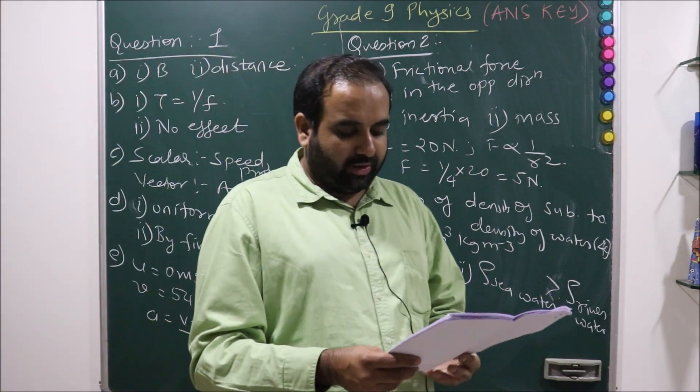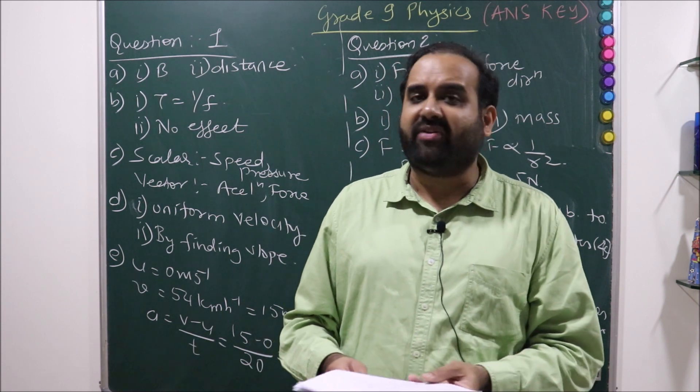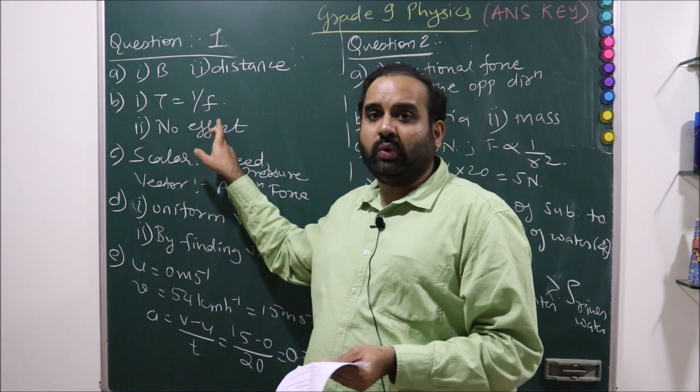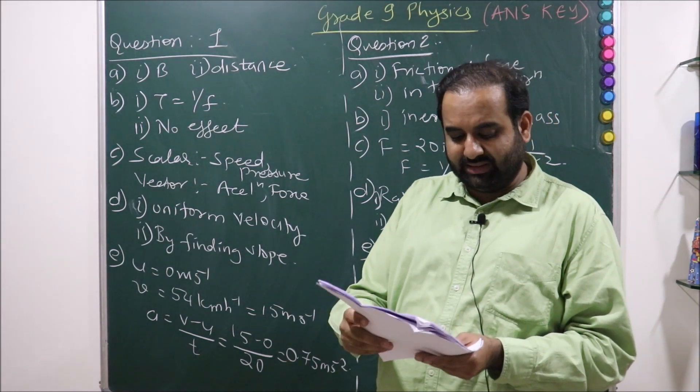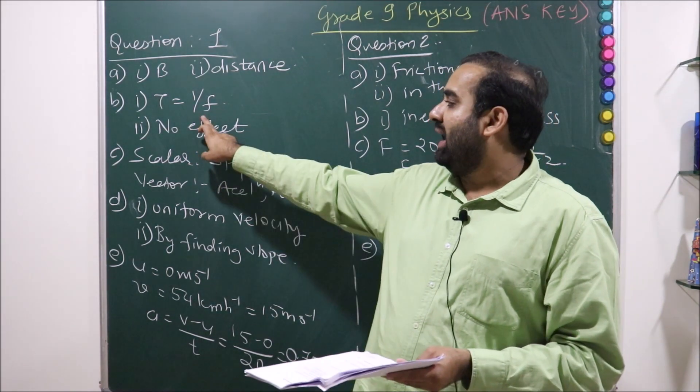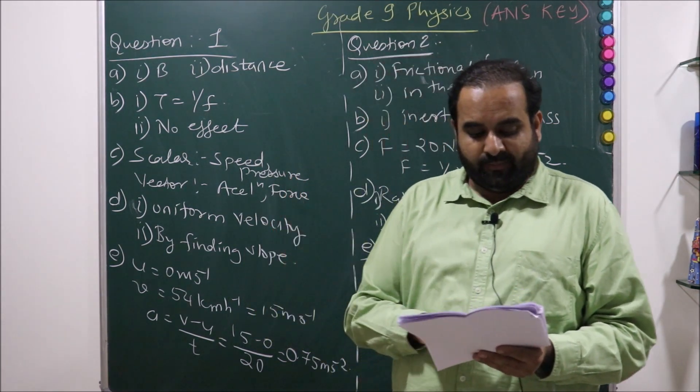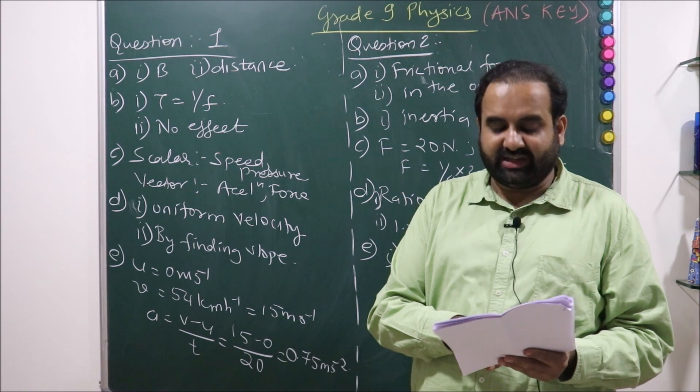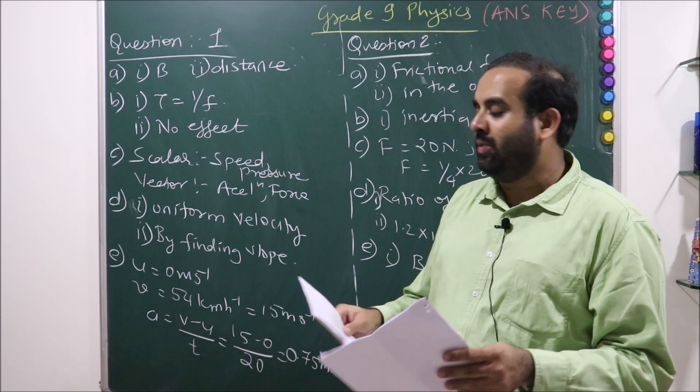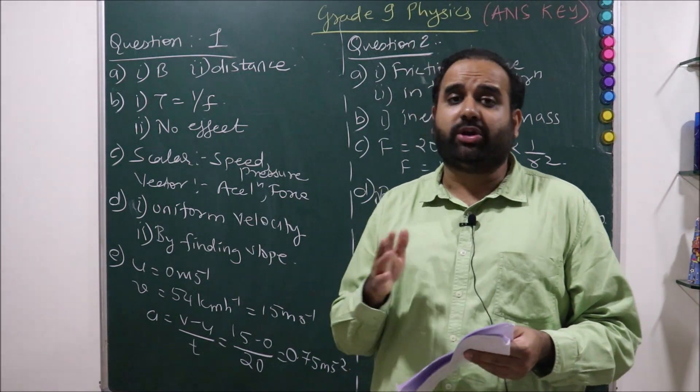What is the relation between time period and frequency of a pendulum? Very simple: T equals 1 upon f, inversely proportional. What will be the effect on time period of pendulum if the mass of the bob is increased for the same length? We all know that it does not depend upon the mass of the bob. There will be no any kind of effect.